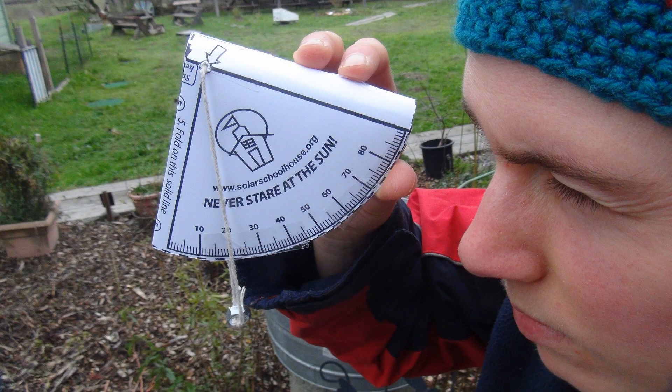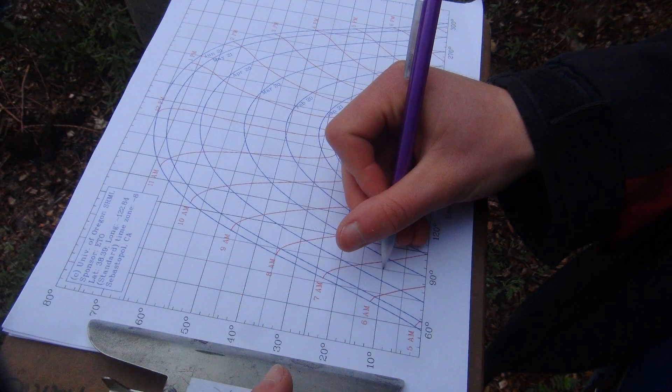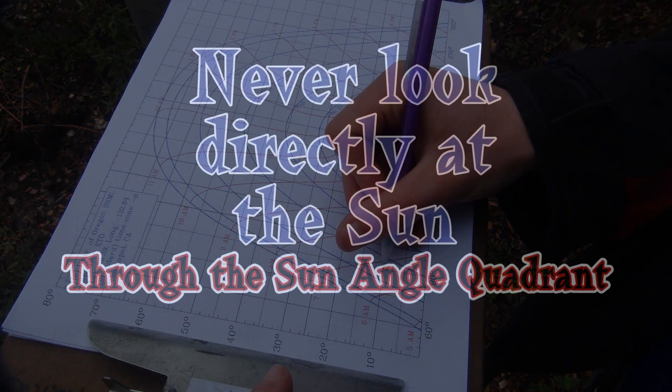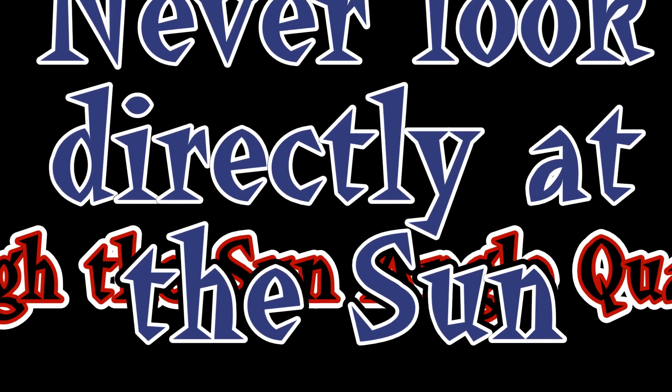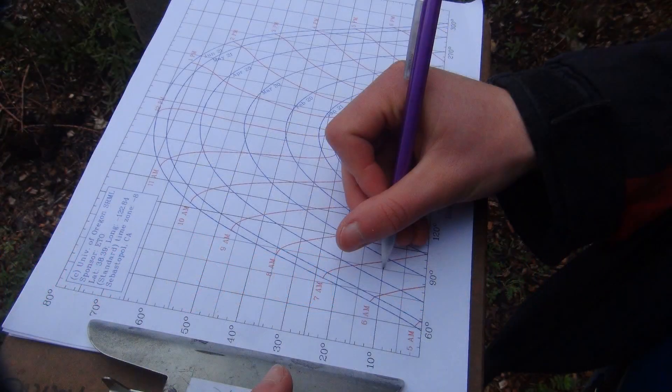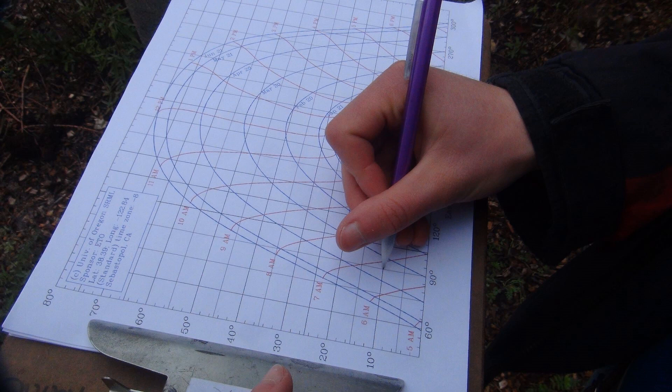Look through the quadrant's tube to the top of the shading obstacle. Then read the altitude angle on the quadrant and mark it on the sun path chart. Remember, you should never look at the sun through the sun angle quadrant. We found the tallest shading obstacle at due east to have an altitude of 10 degrees. So we will draw a point on the sun path chart at 90 degrees over and 10 degrees up.